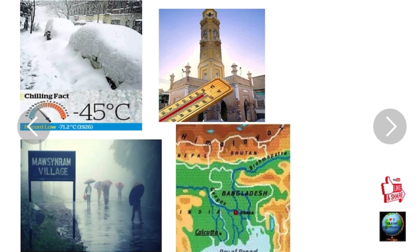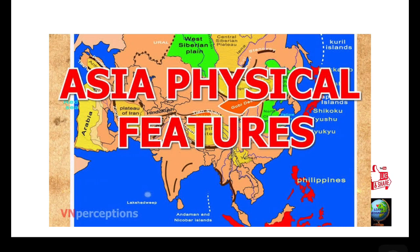Verkhoyansk in Russia is the coldest inhabited place in the world, whereas Jacobabad in Pakistan, with an average summer temperature of 50 degrees centigrade, is the hottest place in Asia. Mawsynram in Meghalaya, India, is the wettest place on Earth. The Ganga-Brahmaputra Delta in India and Bangladesh is the largest delta in the world. In the next video we will learn about the political and physical divisions of Asia — stay connected, subscribe, and don't forget to comment.